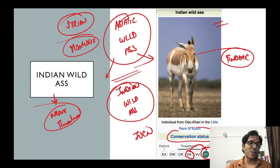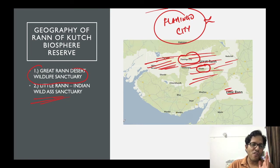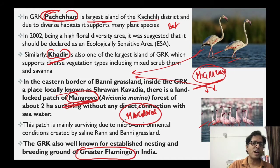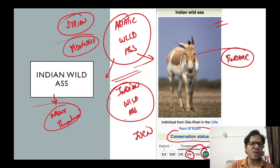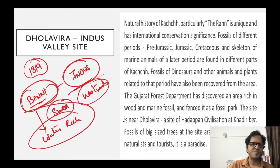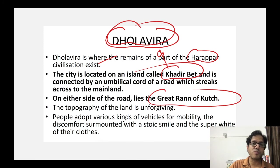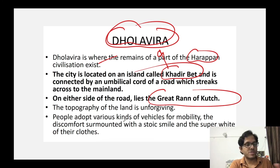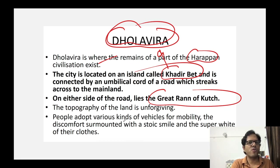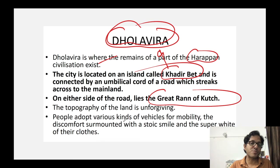So that was it - complete information of Run of Kutch Biosphere Reserve. To summarize: Greater Run of Kutch has Desert Sanctuary, Little Run has Indian Wild Ass Sanctuary, Banni Grasslands, Prosopis juliflora, Khadir Bet, Greater Flamingos, Puchham Island, Mangroves, Indian Wild Ass, and Dholavira - Indus Valley site. No question should be missed from this information. Take care, best of luck. The next session will focus upon East Himalayan Biosphere Reserves: Kanchenjunga, then Manas Biosphere Reserve, then Dibru Saikhowa. Any doubts - put them in the comment box. Don't forget to subscribe to YouTube channel IAS Knowledge Mantra.